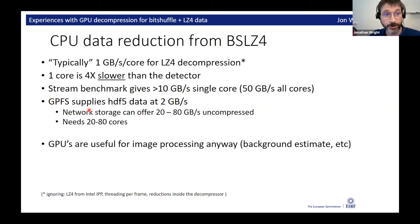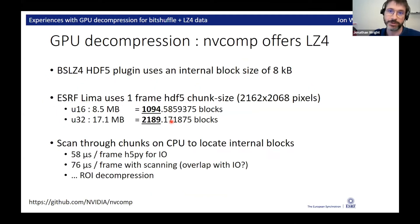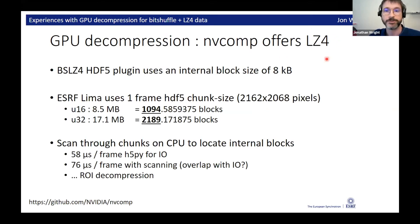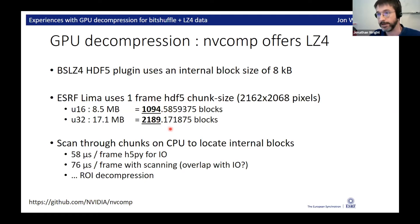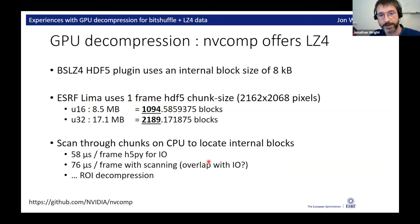There's a new file system here that comes with the computers that goes at two gigabytes per second, so we could be getting up to 20 or 80 — but we don't get that. So I looked into using a GPU, because NVIDIA gives away a thing that does LZ4 decompression. Inside the BSL-Z4 format, there are lots of little blocks and they're all 8 kilobytes. One of my pictures has got 1,000 or 2,000 blocks inside, so you can do parallel processing on one picture. But we scan the HDF5 chunks on the CPU to locate these internal blocks, which is a bit of an overhead.